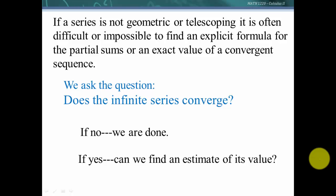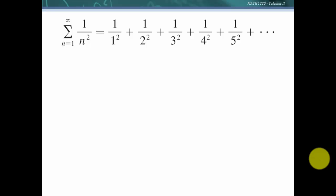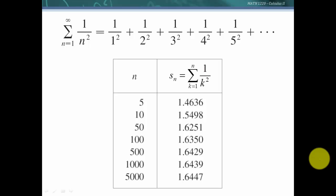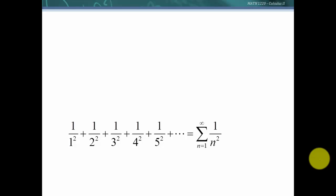Let's consider how we might go about doing this. If we have the series 1 over n² and we look at the partial sums to see if they're approaching a finite value, they appear to be approaching about 1 and 2 thirds, or 1.64. So now let's have a closer look and see what we can do to determine if that is the case.